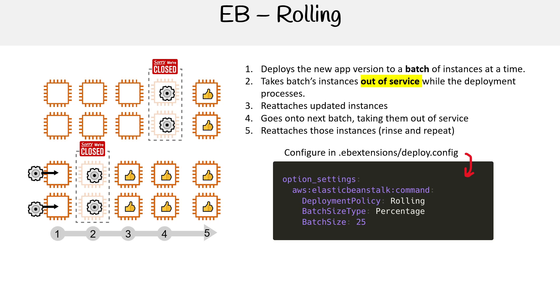If you want to configure this, you'd set up an eb extensions and set the deployment policy to rolling. You have some options here, such as changing the size type — for example, percentage — and the amount.